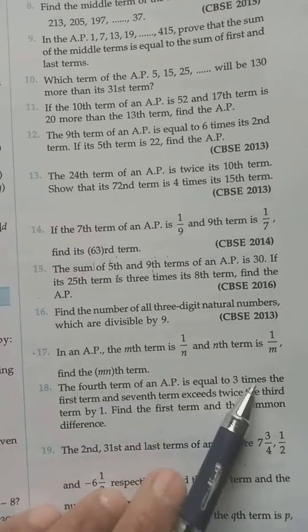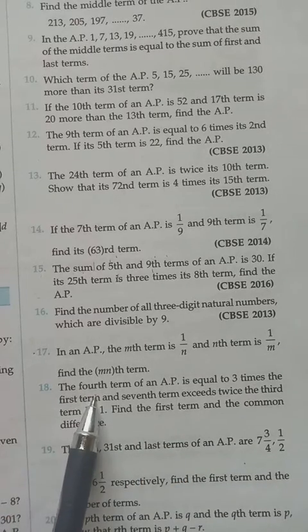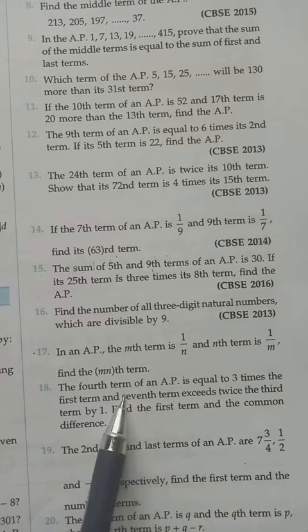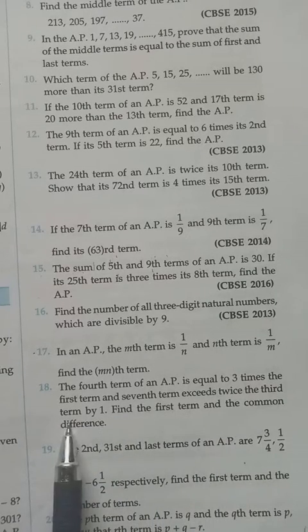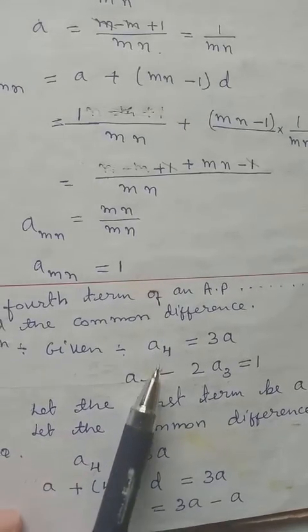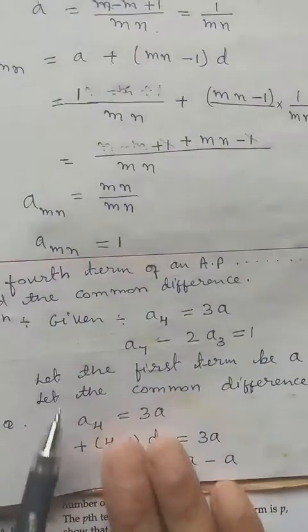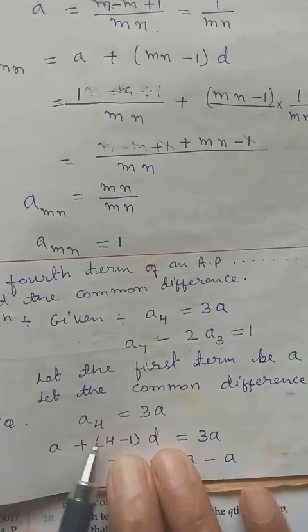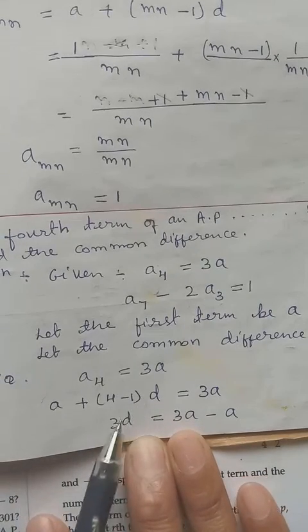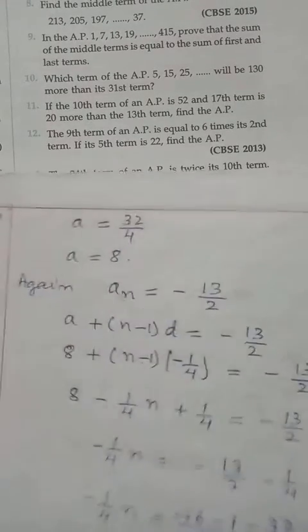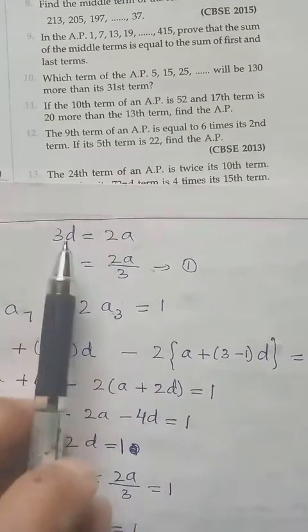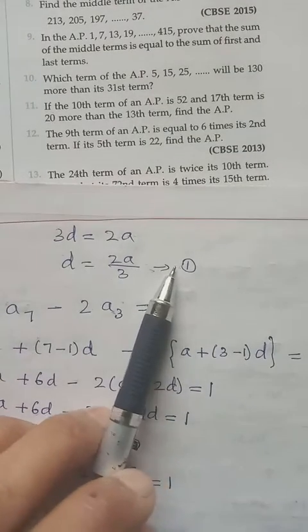Moving to question 18. The fourth term a4 equals 3 times the first term a, and the seventh term a7 exceeds twice the third term by 1, i.e., a7 − 2×a3 = 1. Let the first term be a and common difference be d. For a4 = 3a: using the formula a + 3d = 3a, so 3d = 2a, giving d = a/3. This is equation 1.